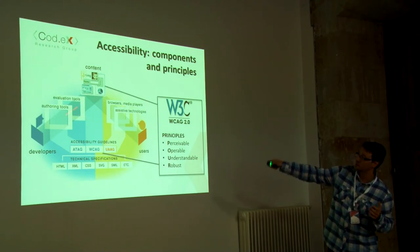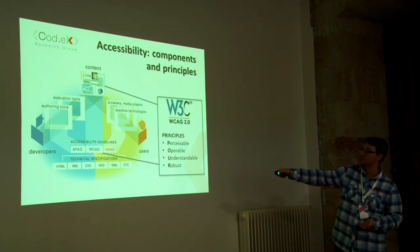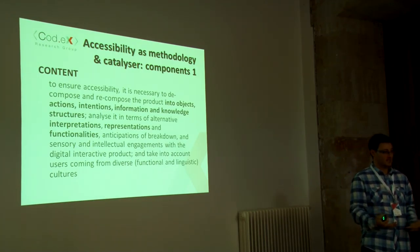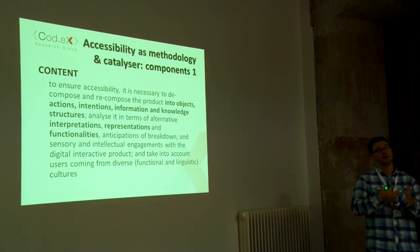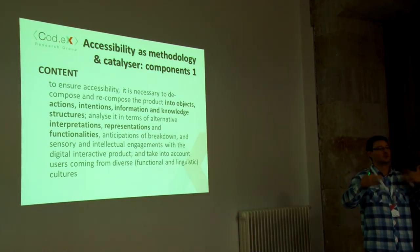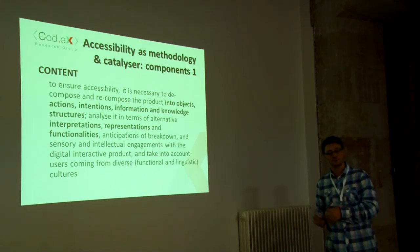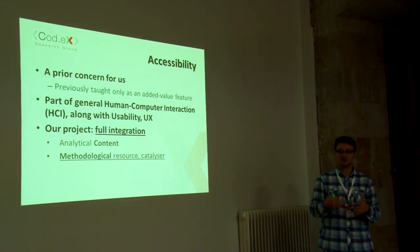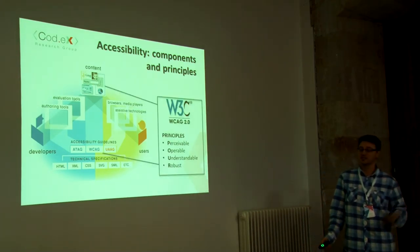There are three main components — content, developers, and users — and we will eventually look into all three, but for now we concentrate on content, specifically the WCAG principles of producing accessible content. To ensure accessibility of a product, it is necessary to decompose the product and recompose it into objects, intentions, and actions: what did the designer mean, what did he want to achieve? By focusing on this, we produce an analytical process very important for localization. This is the main idea behind using accessibility not only as content to be taught to students, but as a methodological resource and catalyser for teaching localization.